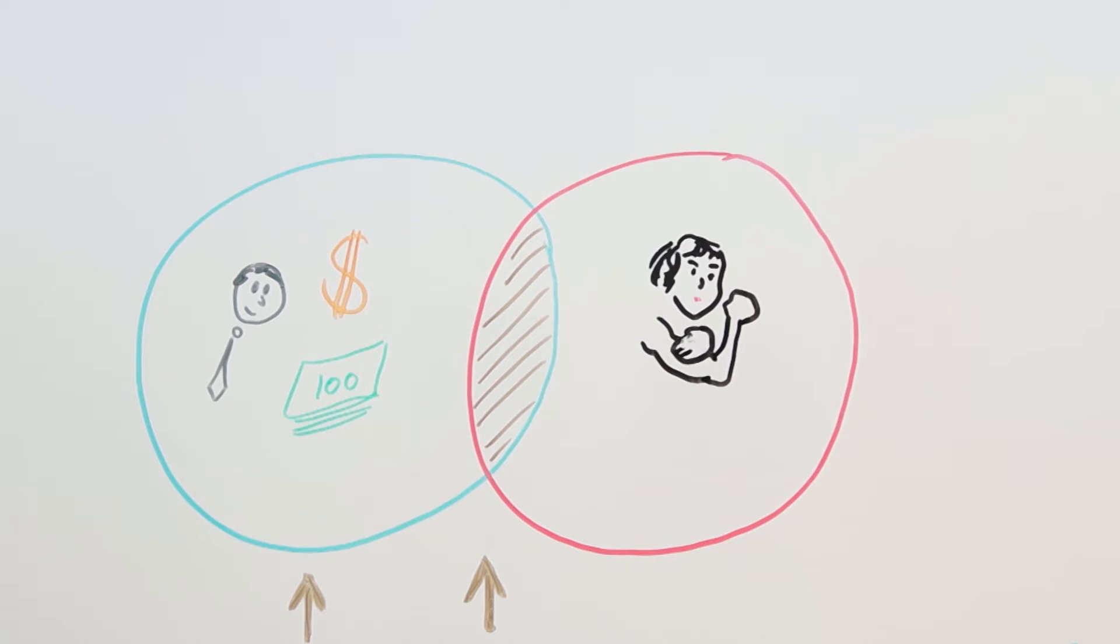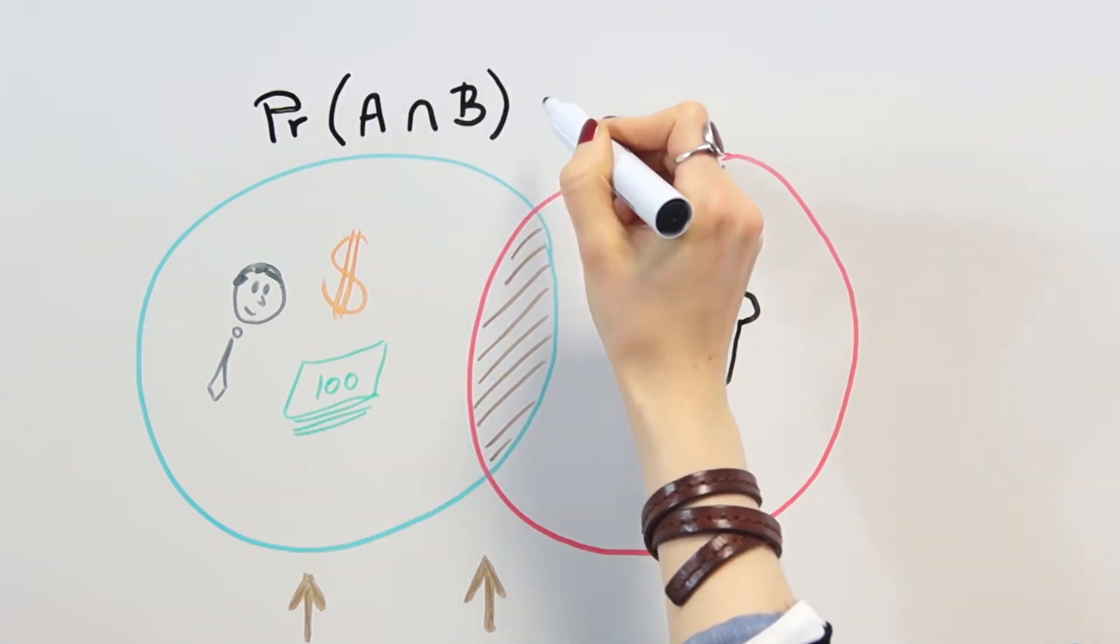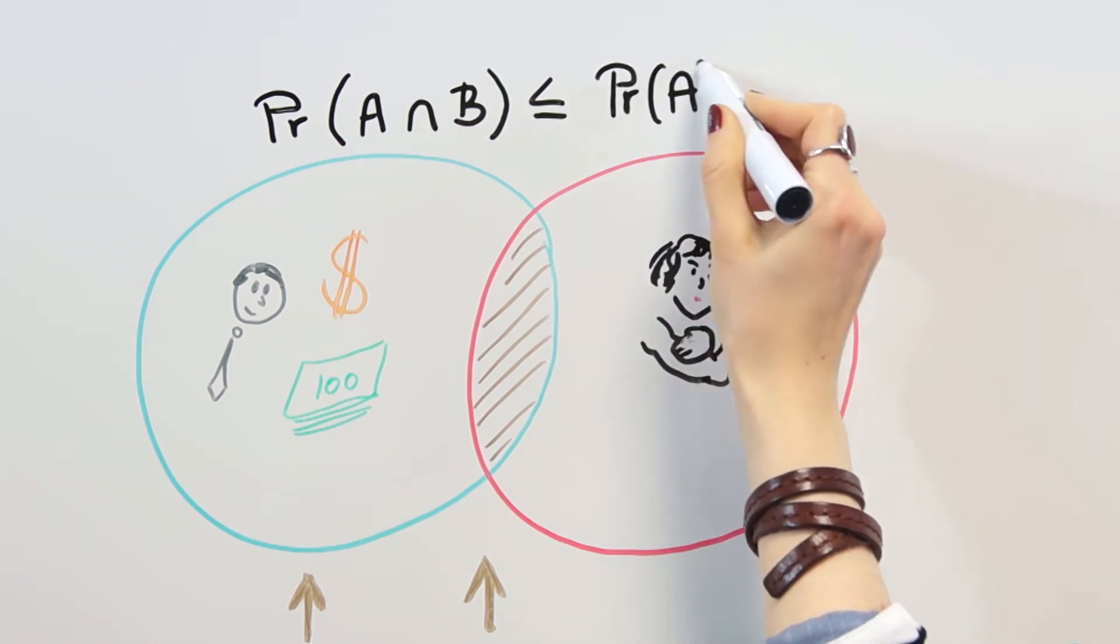That includes feminist bank tellers but also all sorts of bank tellers with interests in other domains. Your math teacher would say that the probability of two events occurring together is always less than or equal to the probability of either one occurring alone.